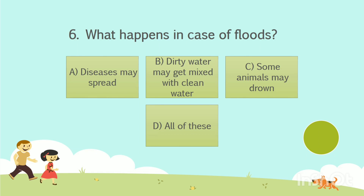Question No. 6: What happens in case of floods? Option A: Diseases may spread. Option B: Dirty water may get mixed with clean water. Option C: Some animals may drown. Option D: All of these. Your time starts now. The answer is Option D: All of these.